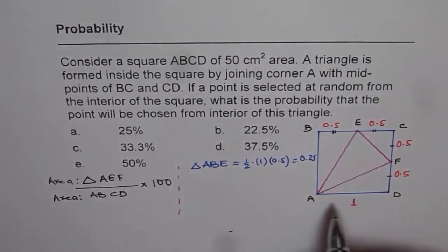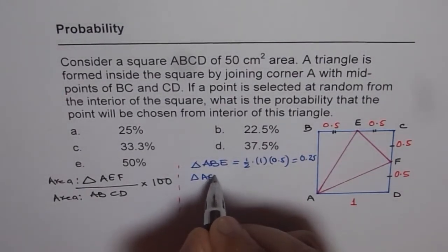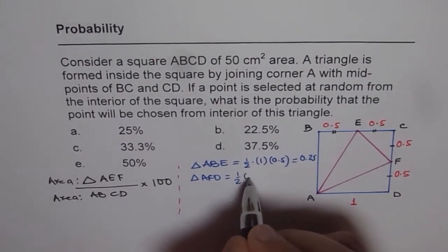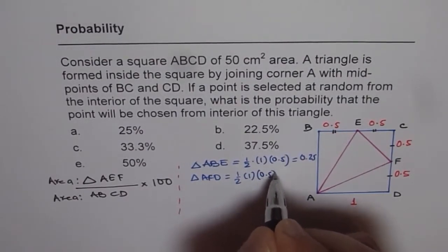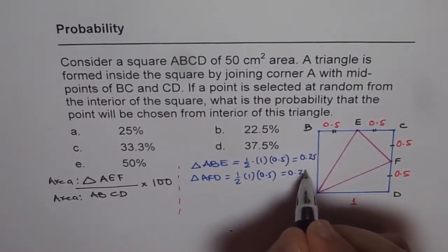Similarly, what is the area of triangle AFD? It is also 1 times half of 1 times 0.5, or you could have written half. In that case, 1 fourth was the same as 0.25.